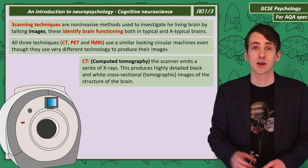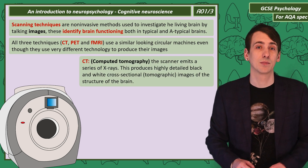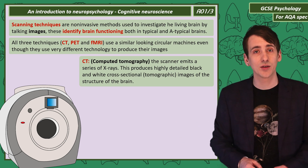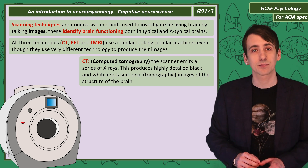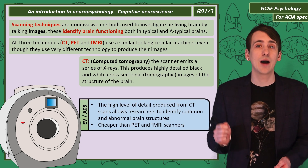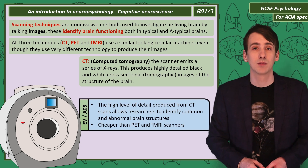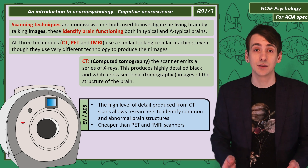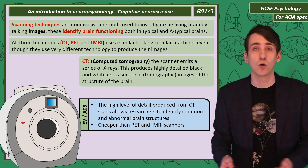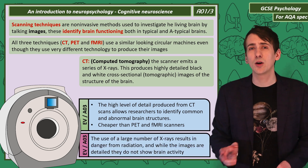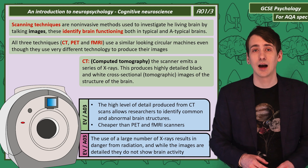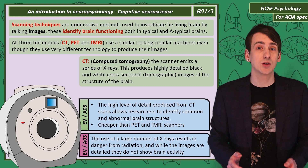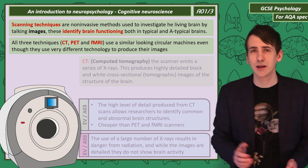CT stands for Computed Tomography. These scanners use a series of X-rays to produce detailed black and white cross-sectional images showing the structure of the brain. A CT scan shows a very high level of detail, giving researchers the ability to identify small, unusual structures. Another advantage is it's cheaper to perform than a PET or fMRI scan. However, firing a large number of X-rays at someone's brain is a radiation risk, and while the images of brain structure are sharp, they don't show brain activity.